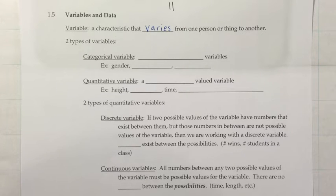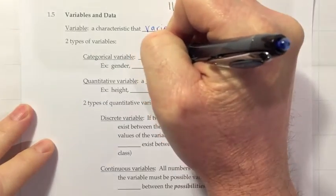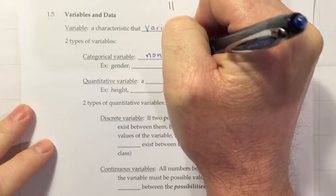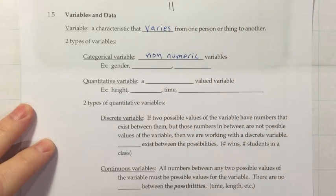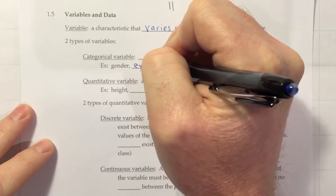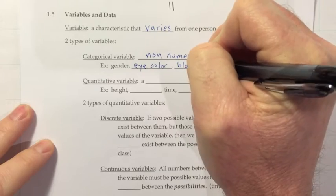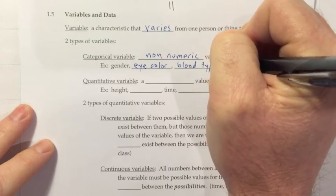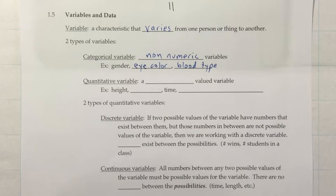So, because of that, we say our variables have two types. There's a categorical variable, which is the non-numeric variables. So, examples of that would be gender, eye color, like I said a moment ago. Maybe another one might be blood type. So, the type of answers you get when you ask people about these variables are not numbers.